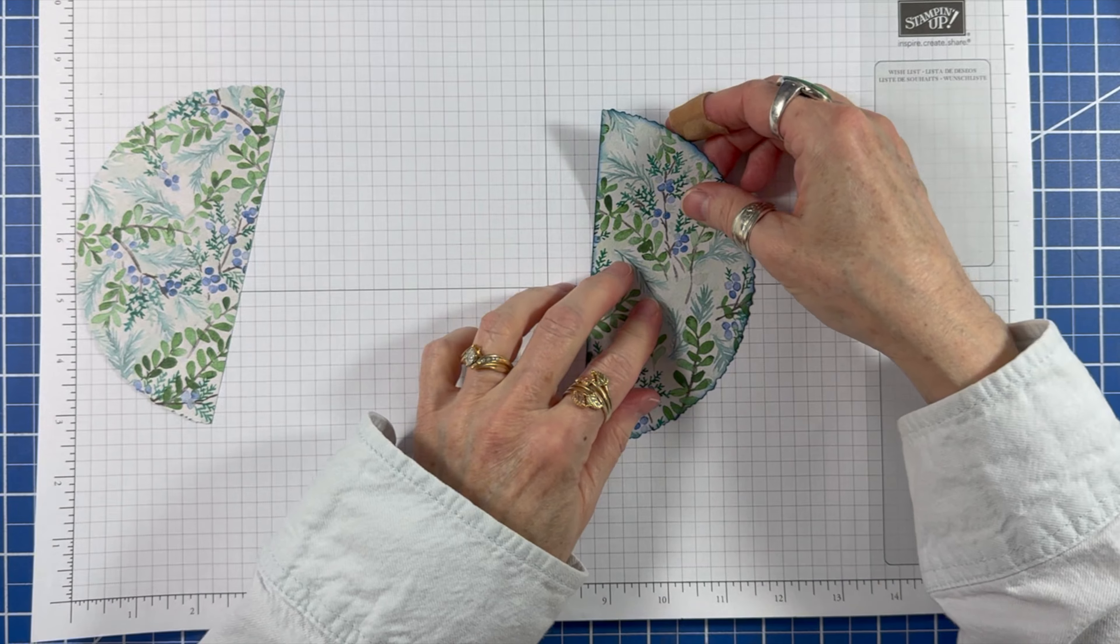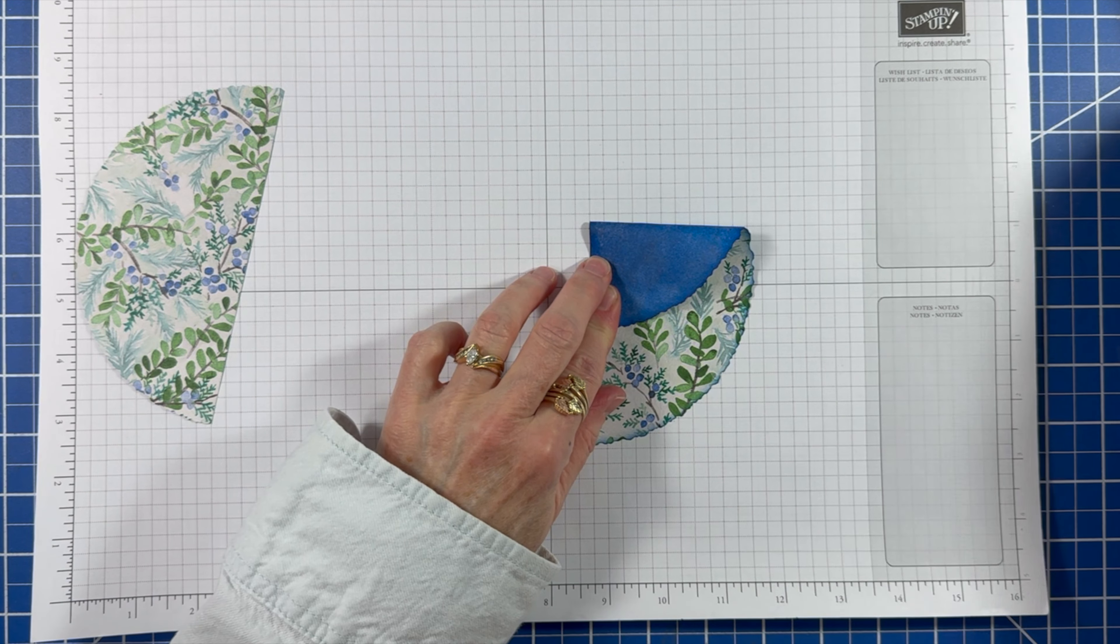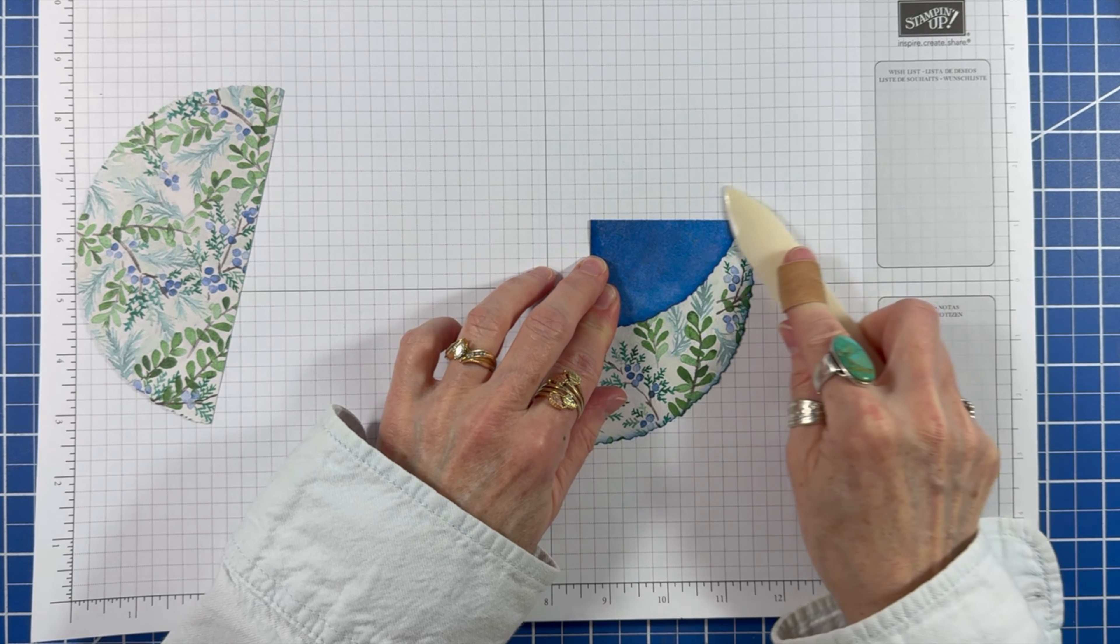I like to start with the cut edge towards the left and how far down you pull the top determines how tall your tree is. Then I'm burnishing the fold.